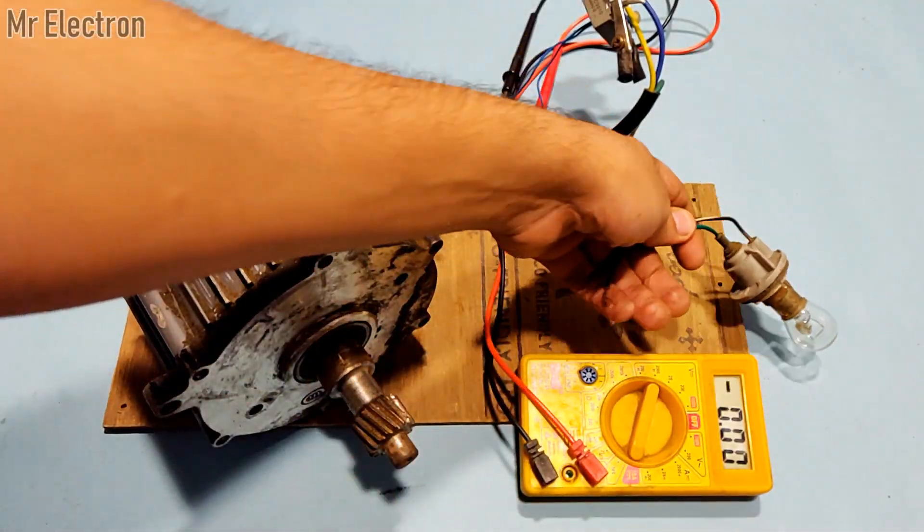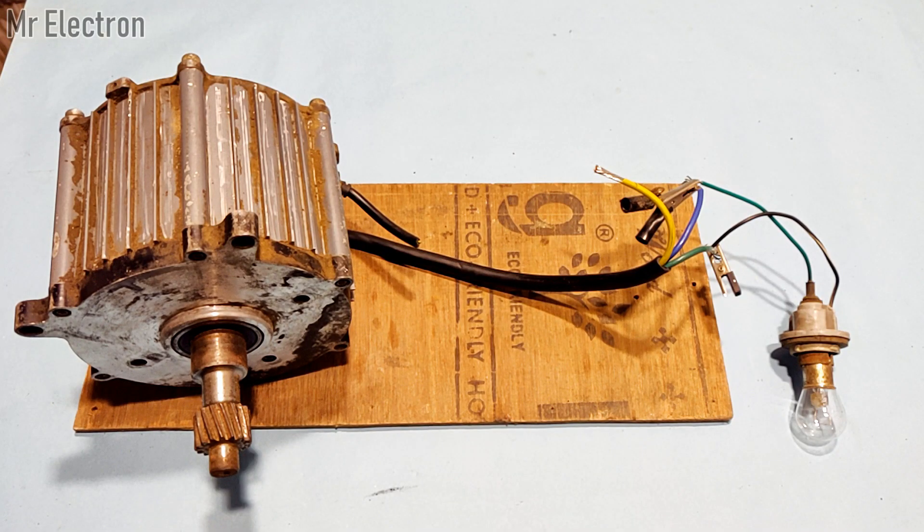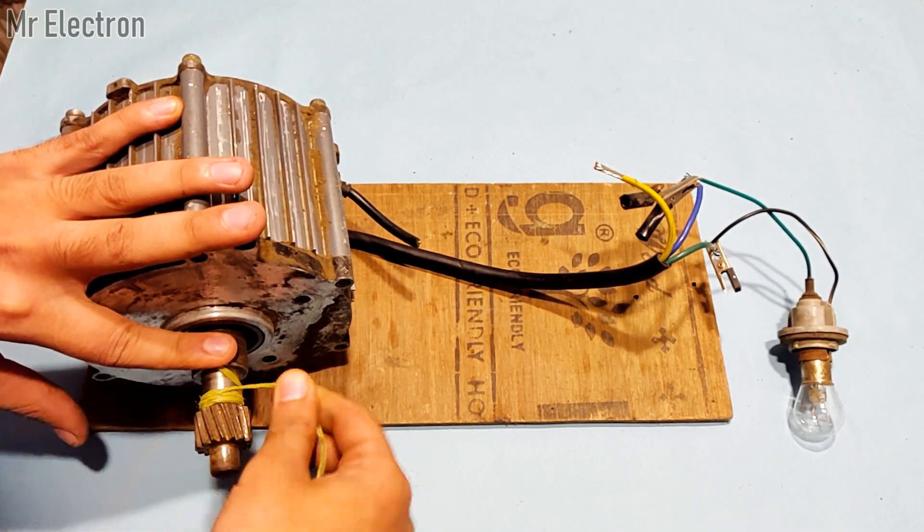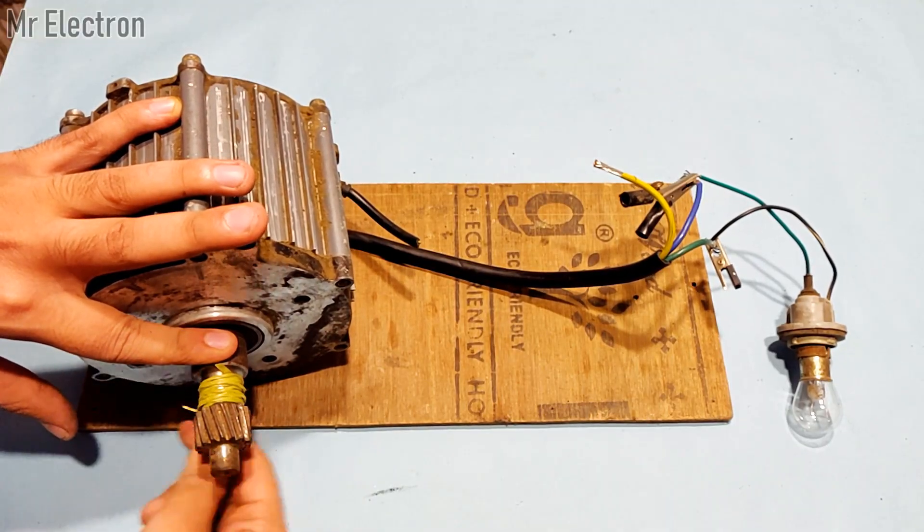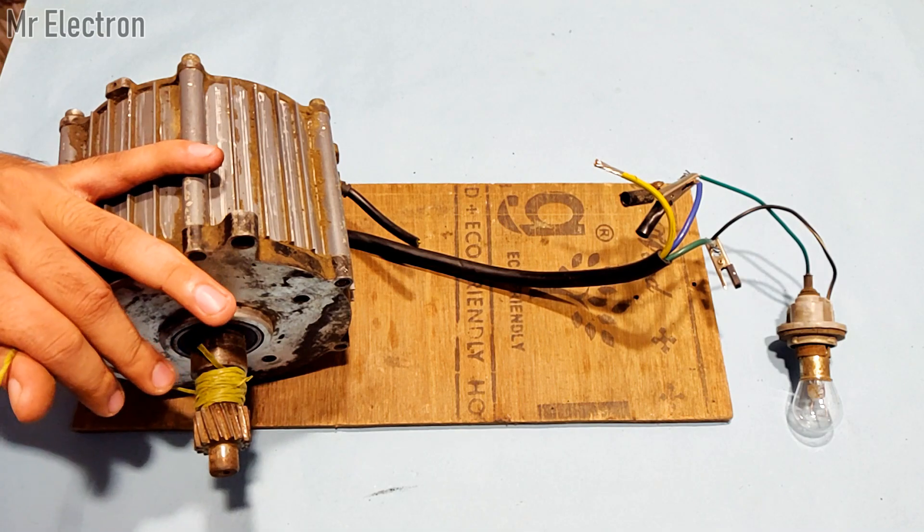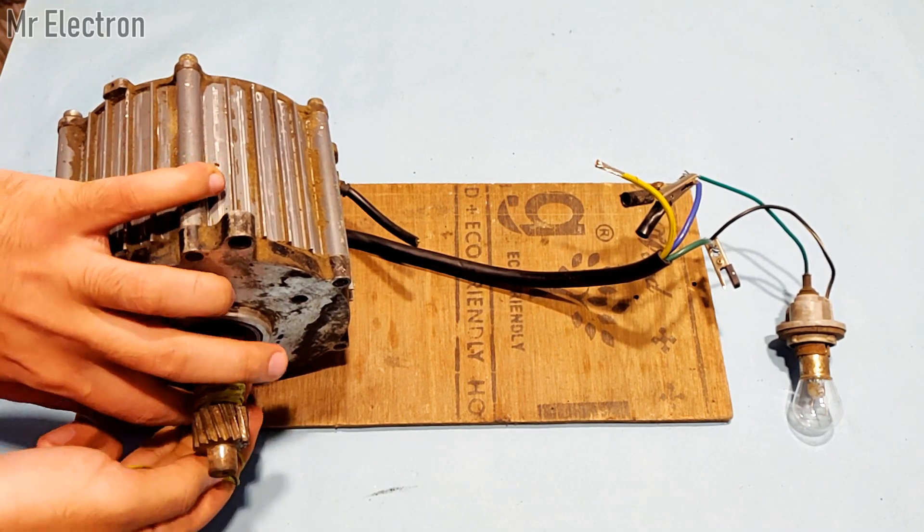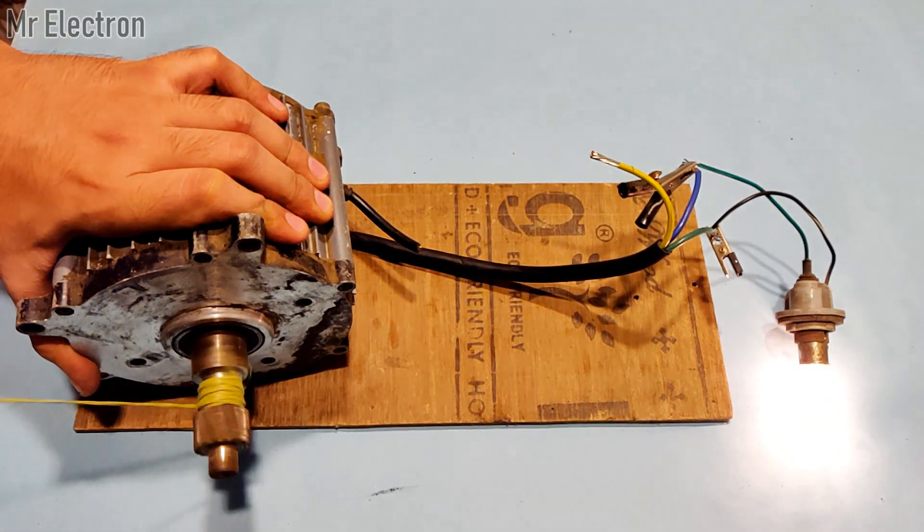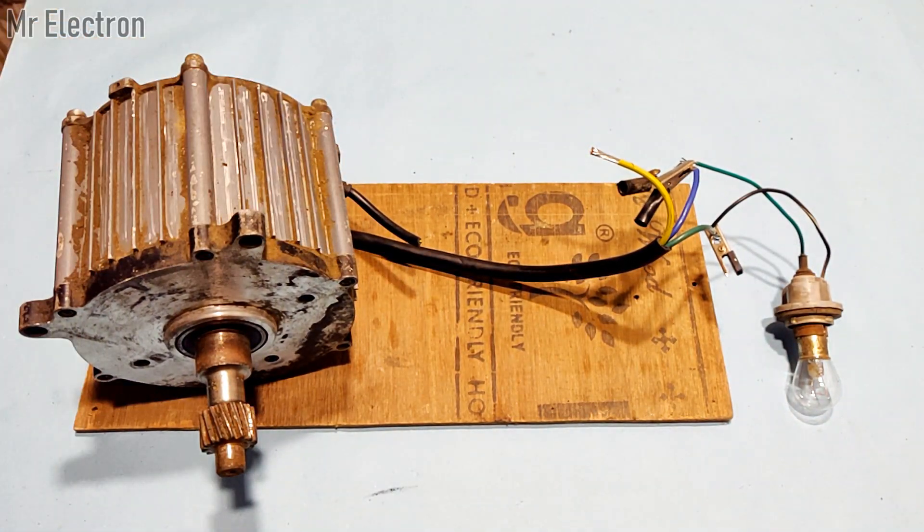Let's do some tests with practical loads like this 12 volts motorbike bulb that I'm going to use as a load for this BLDC generator. Since this one is a resistive load, I don't need to use a bridge rectifier. You can see the bulb can glow brightly with this.